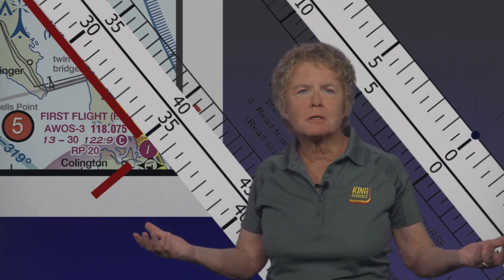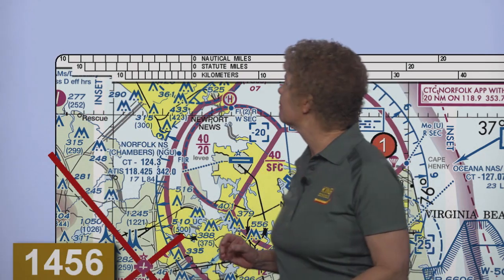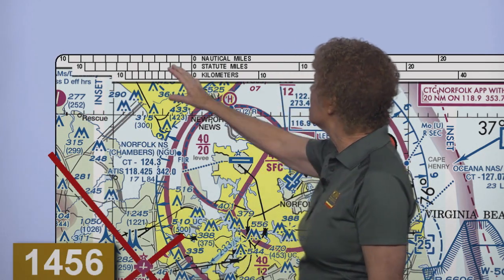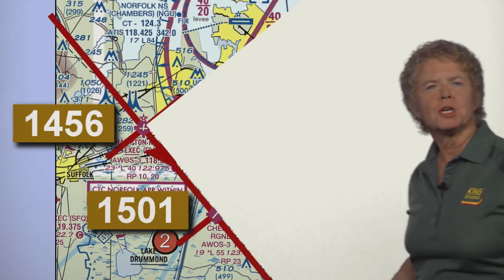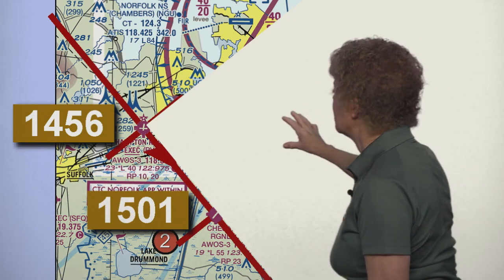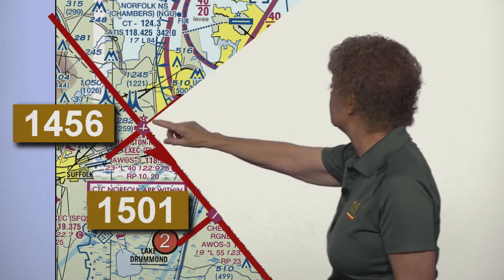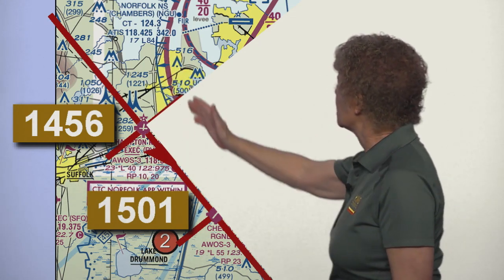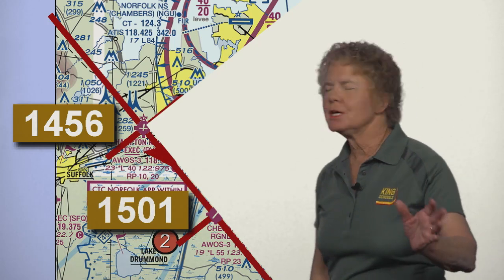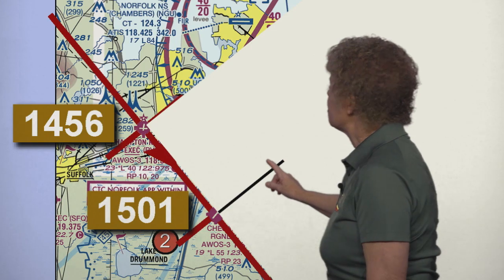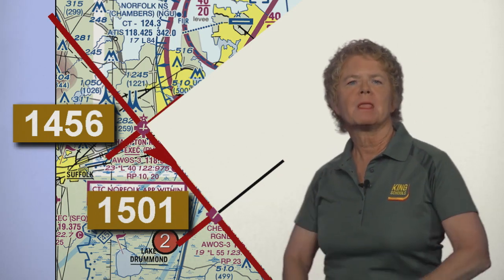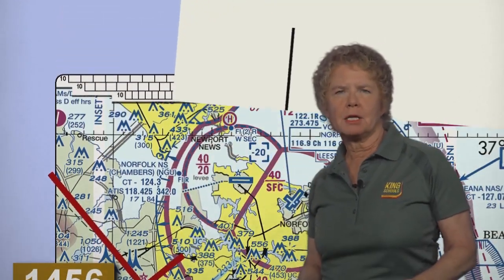The distances measured using a plotter can be off by anywhere from 10 to 30 percent from the real distance. So what's a test taker to do? The FAA has conveniently provided a mileage scale somewhere on each sectional chart excerpt, and that mileage scale is what you have to use on the test to get the correct answer. Here's how you use that mileage scale: take a piece of scratch paper you'll be given when you start the test, put one corner down on Hampton Roads Airport with the straight edge of the paper lined up along your course line, then use your pencil to draw a line on the paper at Chesapeake Regional Airport.